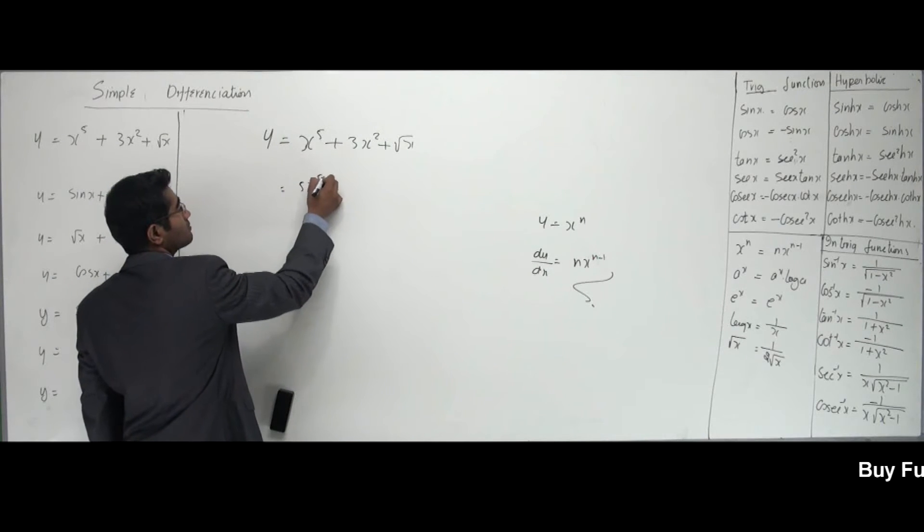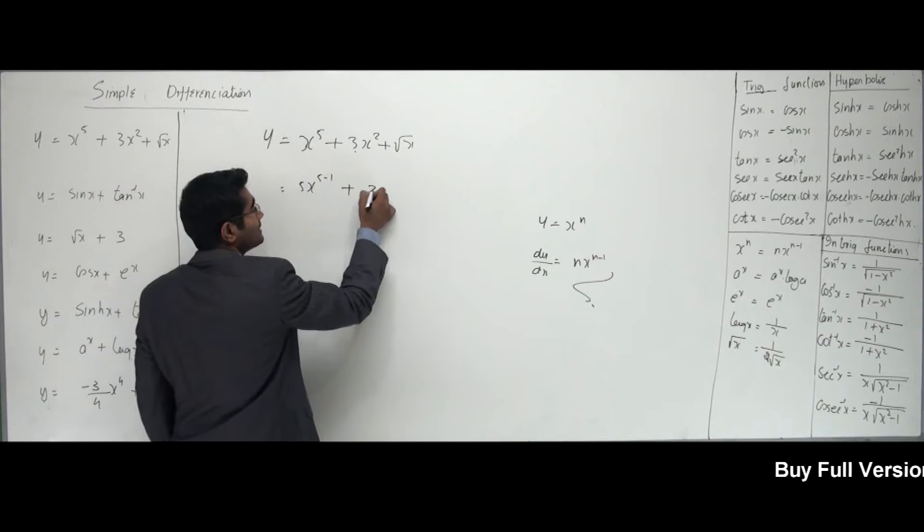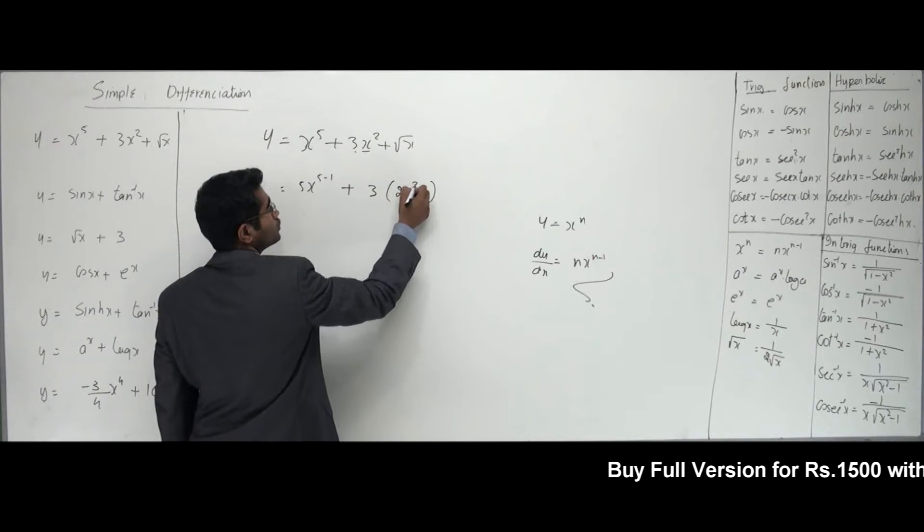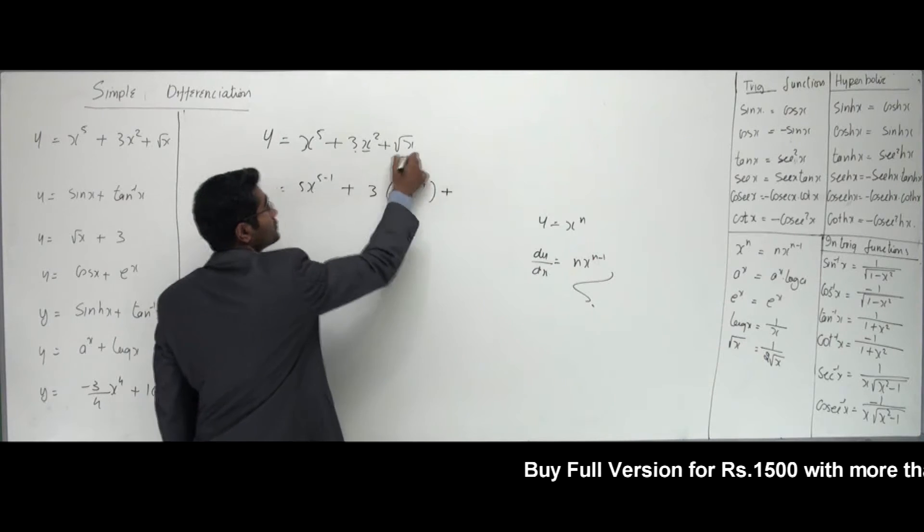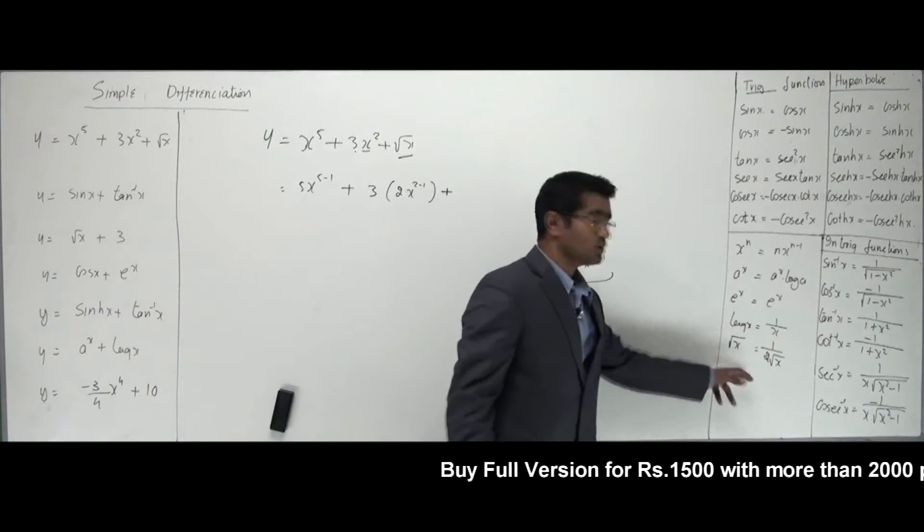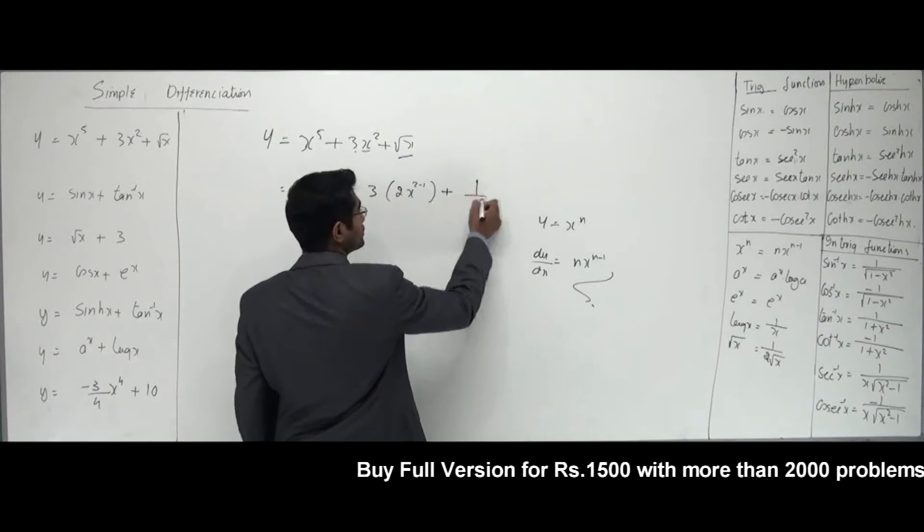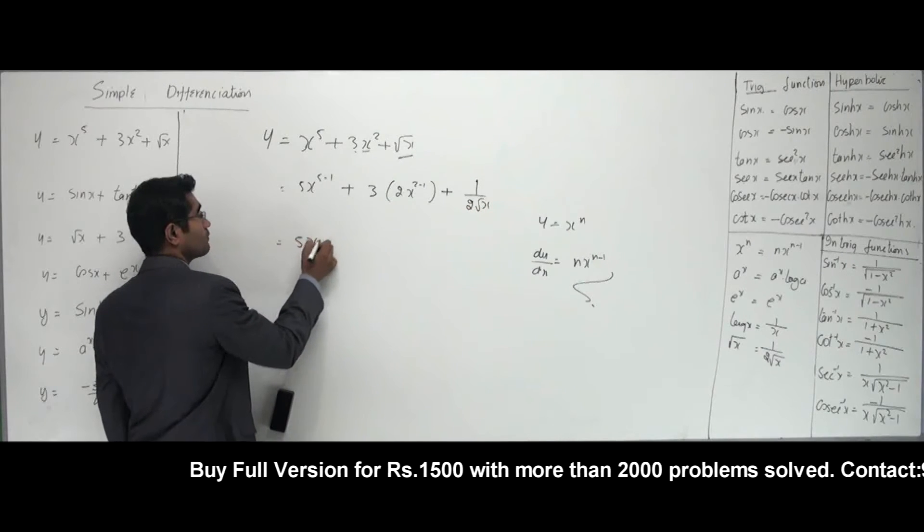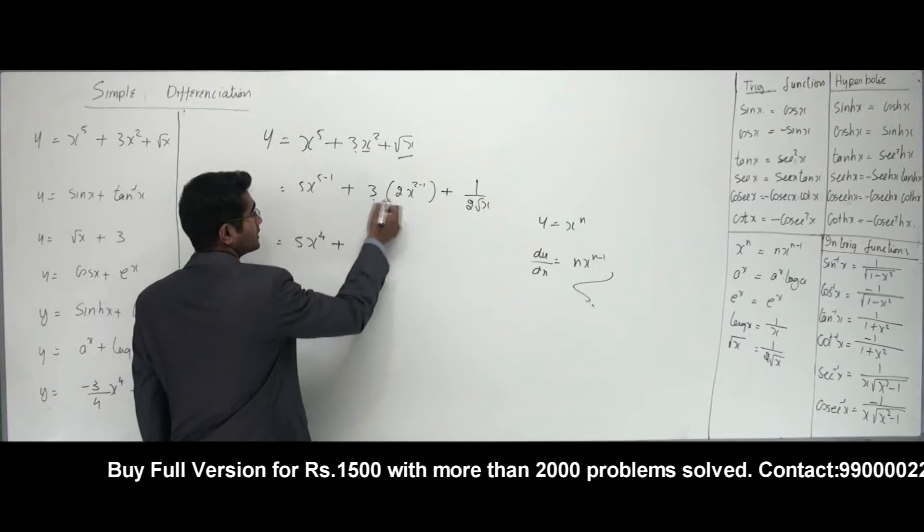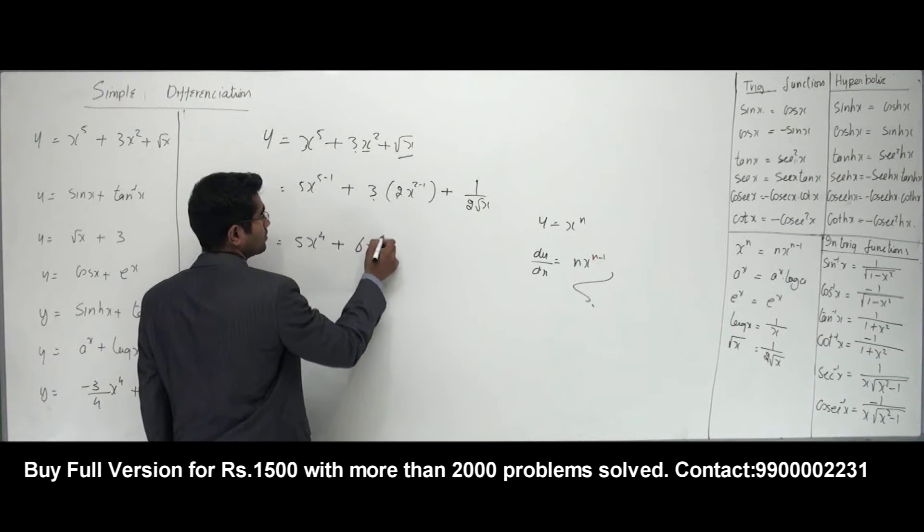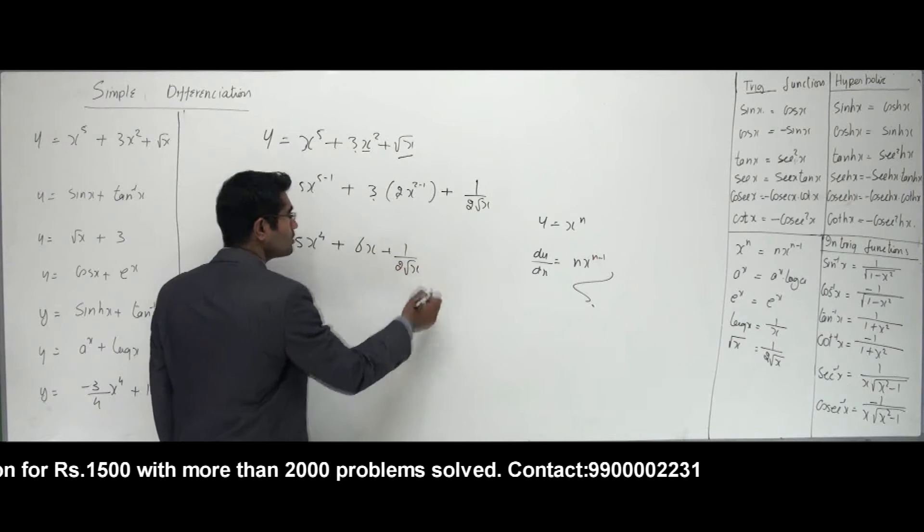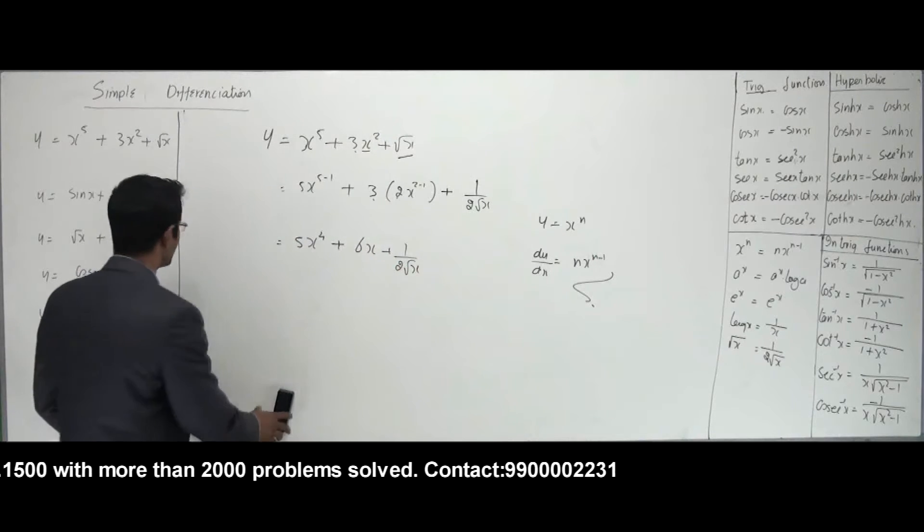5 times x to the power 5 minus 1. This 3 would remain outside. Differential of x squared is 2 times x to the power 2 minus 1. Differentiation of root x is 1 over 2 root x. Now if I simplify this, I'll get 5x to the power 4 plus 3 times 2 is 6x to the power 1 plus 1 over 2 root x. That's all.